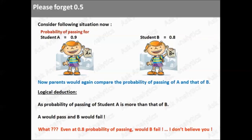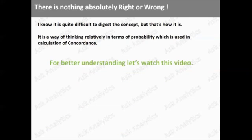But, remember, we have already forgotten the cutoff of 0.5. So now, while we compare the probabilities of passing of student A and student B, we would say, student A will pass, but student B will fail. I know, you must be thinking, even at 0.8 probability of passing, would B fail. You are not believing me.